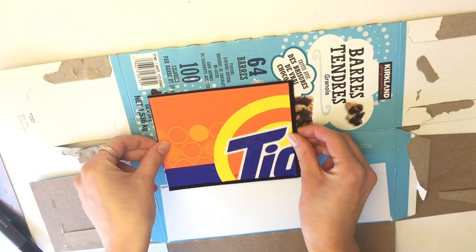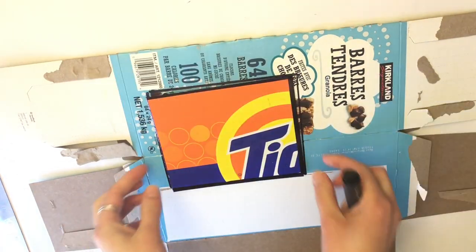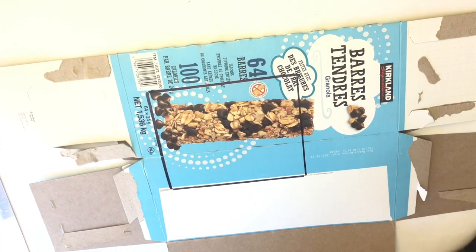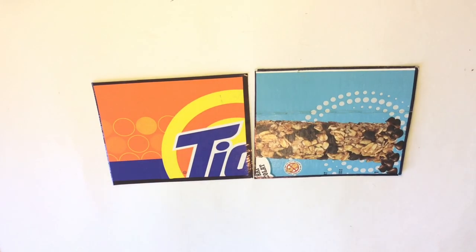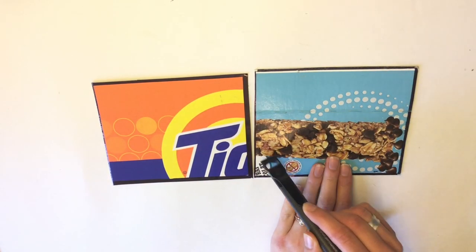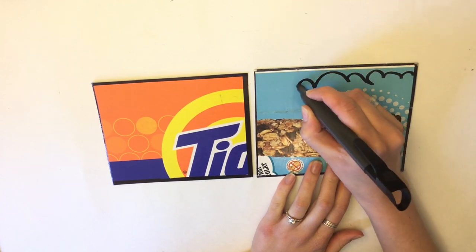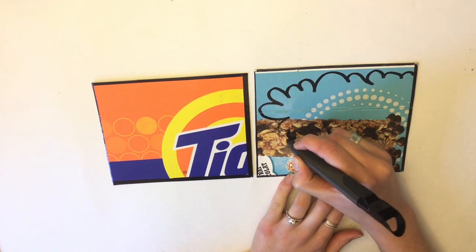The next layer is the cloud shape. Trace the background rectangle onto another piece of cardboard. Draw the shape of your cloud and leave some room for your background to peek through.